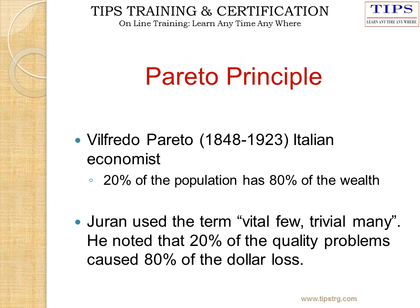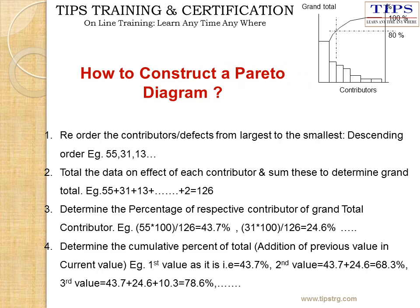We will start with the first tool under the 7 QC tools: the Pareto Diagram. The basic principle of the Pareto Diagram is the 80-20 rule — Vital Few and Trivial Many. This was founded by Vilfredo Pareto, the Italian economist, who observed that 20% of the population holds 80% of the wealth. Now, the construction of the Pareto Diagram: how are we going to construct it?